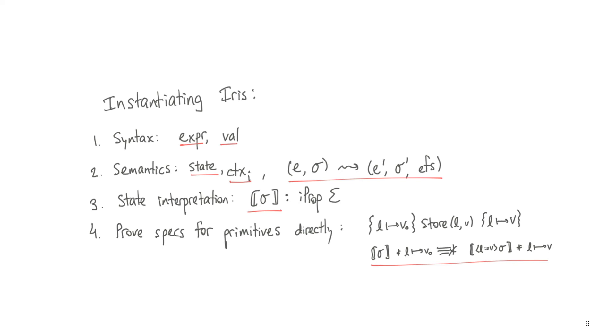To summarize what we've seen so far, what you need to do to instantiate Iris for a custom programming language is: first, you need to define a syntax for your language in terms of its expressions and values. Second, you have to give your language a semantics. The semantics first need some type of state. For example, it would typically have something to model the heap.